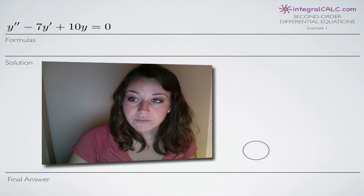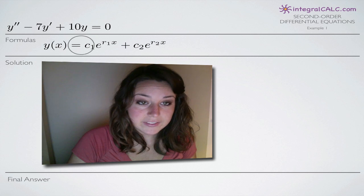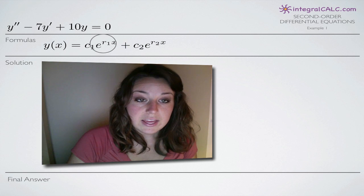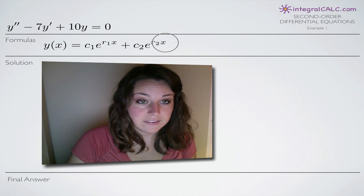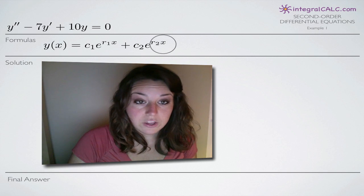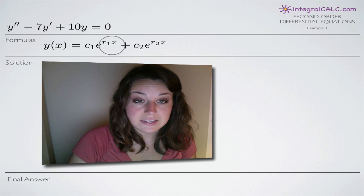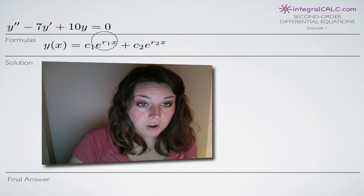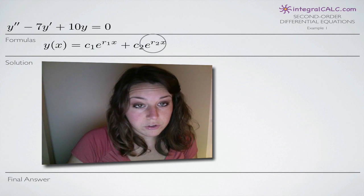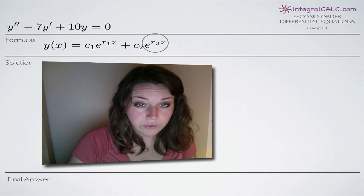And as with any second order differential equations problem, the formula that we're going to be using is y of x equals c sub 1 e to the r sub 1 x plus c sub 2 e to the r sub 2 x. And the way that we're going to use this formula, our answer will still contain c sub 1 and c sub 2. What we're looking to solve for is r sub 1 and r sub 2. So we want to replace those with actual values from our problem.